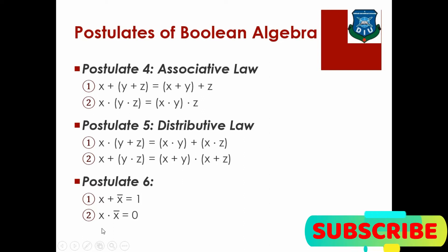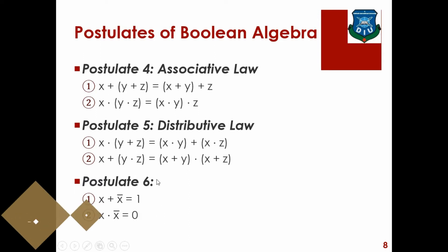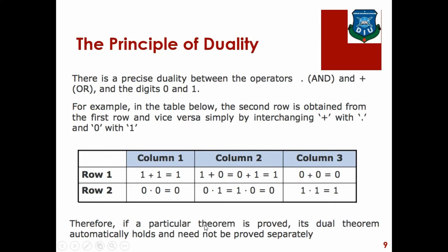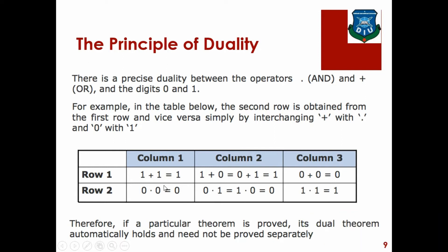There is also the concept that one plus one equals one in Boolean algebra. Normally in mathematics, one plus one equals two, but in Boolean algebra, one plus one is one. Also, zero plus zero equals zero.